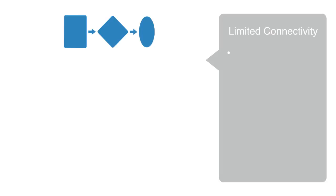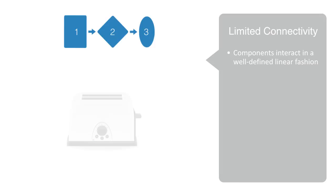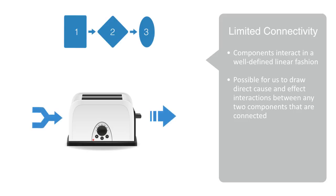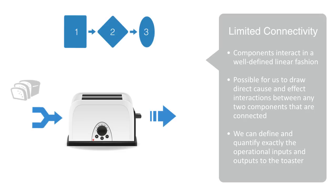Linear systems have a relatively low level of connectivity between the components and with other systems in their environment. Added to this, components interact in a well-defined linear fashion. There is a limited amount of interactions in our toaster, and it is often possible to draw direct cause and effect interactions between any two connected components. Also, we can define and quantify exactly the operational inputs and outputs to the toaster. A single source of electricity and bread goes in, with toast coming out, and there is a single simple parameter — one dial for varying how well we want our toast cooked.